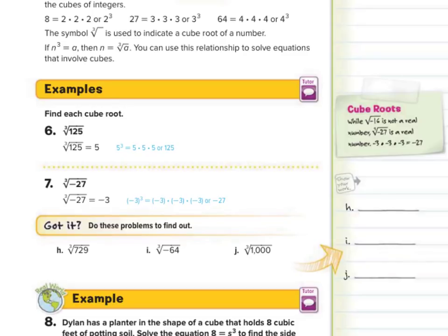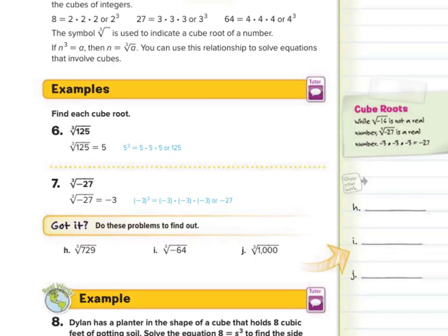Now, we can do negative cube roots. The cube root of negative 27 is negative 3, as negative 3 times negative 3 times negative 3 is negative 27. For the cube root of 729, again trial and error — ask yourself what times what times what is 729. I'll start big: 10 times 10 times 10 is 1,000, too big. Let's try 9: 9 times 9 is 81, times 9 is 729. So the cube root of 729 equals 9.